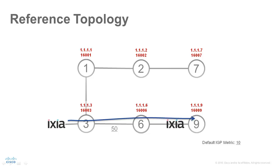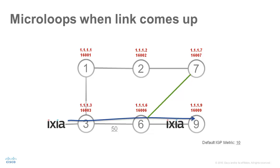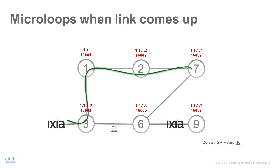During the demonstration we will bring up a link between node 6 and node 7. When the link between node 6 and node 7 is brought up, the shortest path from node 3 to node 9 follows the path via node 1, node 2, and node 7, as indicated by the green line.